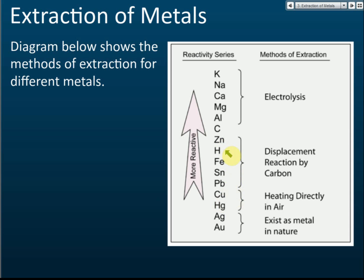Then we have zinc, iron, tin, and lead. These metals are lower than carbon in the reactivity series. Because they are lower than carbon, they can be displaced by carbon. So they can be extracted by displacement reactions using carbon. We will learn displacement reactions in Form 5.